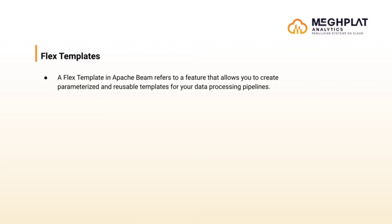We will create our pipeline using any of the languages like Python or Java. This pipeline should include the data processing logic using PTransforms and specific input and output locations. Next, we define pipeline options using the pipeline options class. These options can include things like input/output location, runtime configuration, etc., so that a user who doesn't know how to write code can easily just pass the configurations and locations of the input and output files to get the desired output.